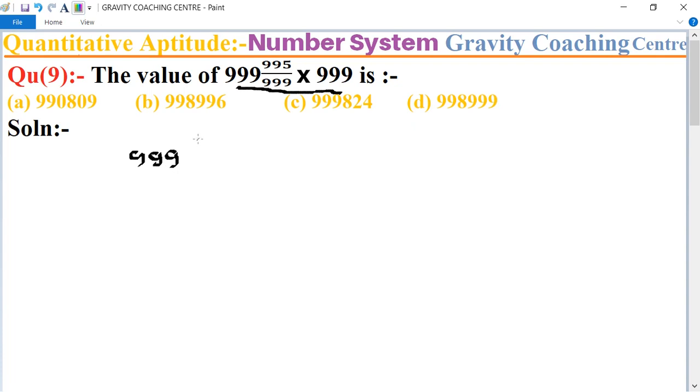And the whole number 995 upon 999, multiply 999.